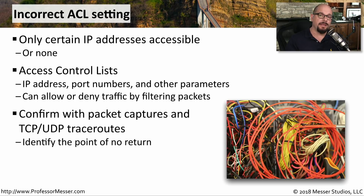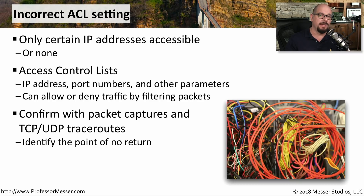If you're trying to determine if an access control list may be blocking your traffic, perform a packet capture to see exactly what traffic you're sending and what's being received. You might also use a traceroute utility that allows you to customize the TCP or UDP port number — this lets you send traffic into the network and identify exactly which hop the traffic is stopping at.